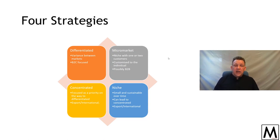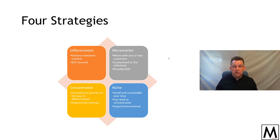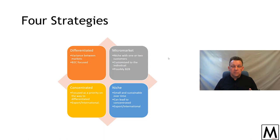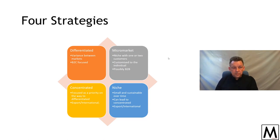A micro market is a step below or above the niche depending on how you see it. A micro market is quite often present in a business-to-business relationship where you only need one or two customers. If you are the accountant for a celebrity, you may not need a second celebrity — if someone is paying enough for your services, you don't need a second customer. Micro market is the idea of it being one or two people; niche market is a small group of people.